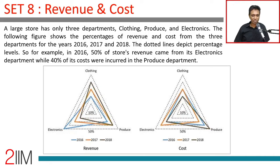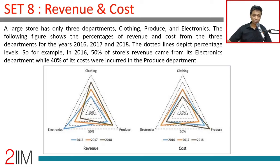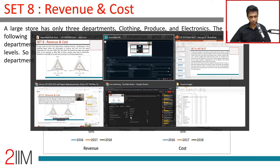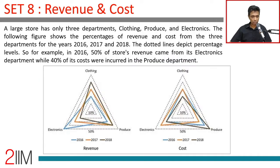The data shows percentages of revenue and costs from three departments for the years 2016, 2017, and 2018. The dotted lines represent percentage levels: 10, 20, 30, 40, 50. For example, in 2016, 50% of the store's revenue came from electronics. So this is the 50 line, then the 40, 30, 20, and 10 lines.